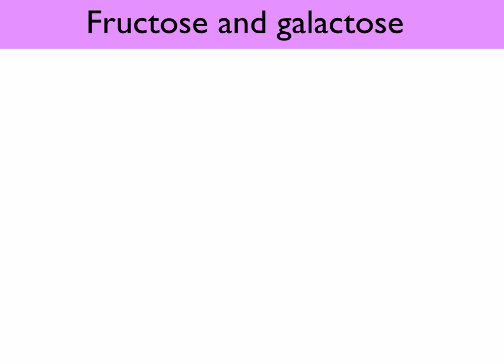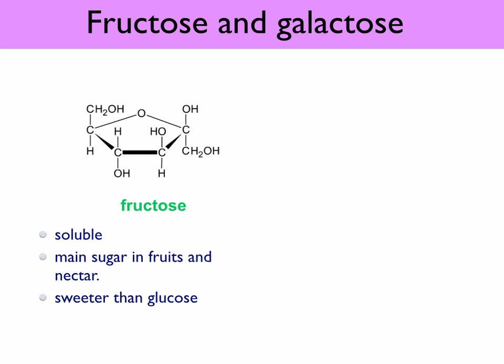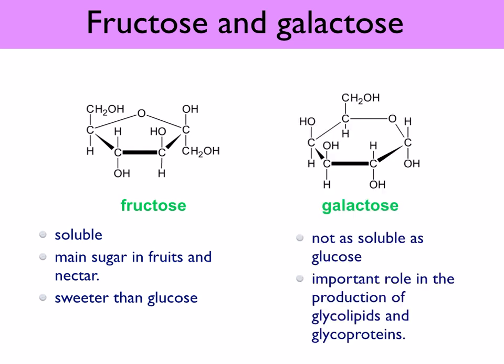Two other important hexose monosaccharides are fructose and galactose. Fructose is soluble, is the main sugar in fruits and nectar, and is sweeter than glucose — it also has six carbons. Galactose also has six carbons, making it a hexose. It's not as soluble as glucose and has an important role in the production of glycolipids and glycoproteins.